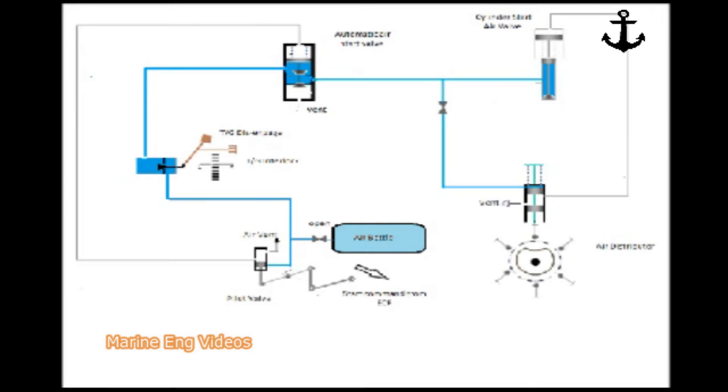The distributor consists of a negative type cam for positive overlap. When the unit number 4 distributor valve comes in the cam profile, the air compresses the spring and the valve opens to operate the same unit number 4 cylinder head starting air valve.